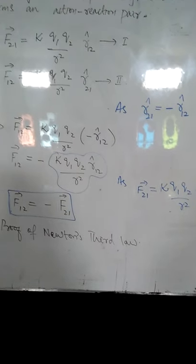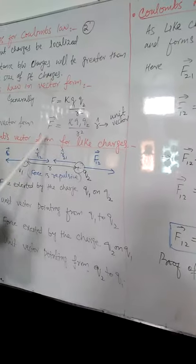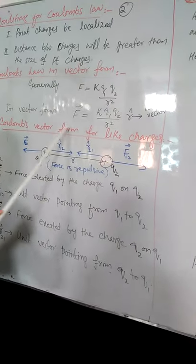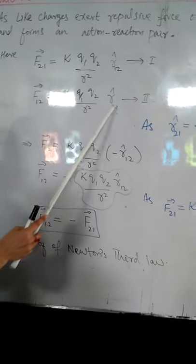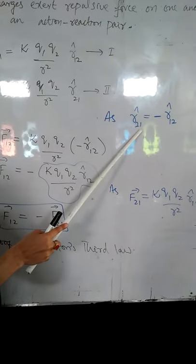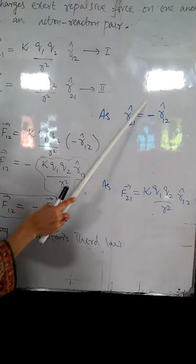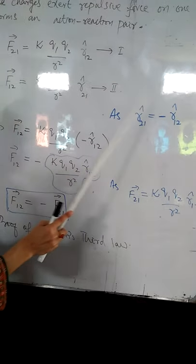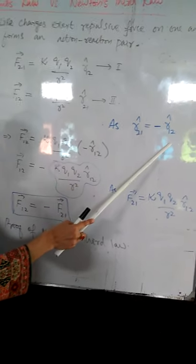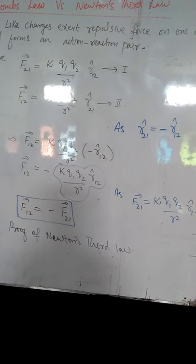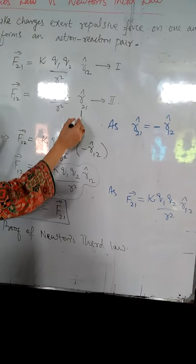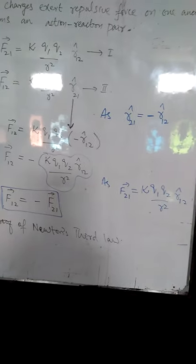Here, as we know that R12 and R21 are unit vectors in opposite direction. So we can write this R21 unit vector in the form of R12 because these both are unit vectors having same magnitude, but they both are in opposite direction. So here I use instead of R21, I used minus R12.